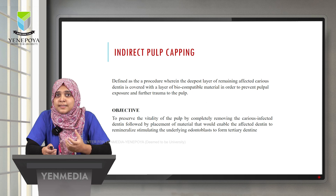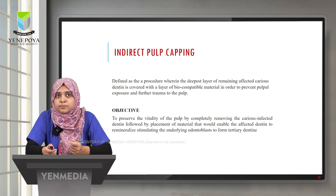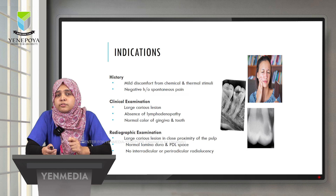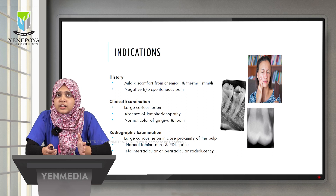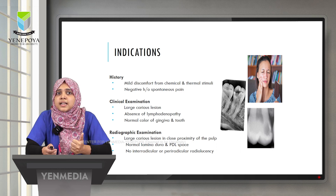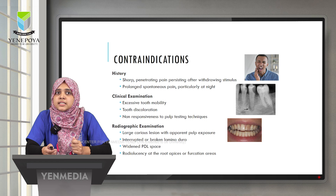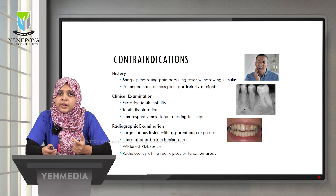Indirect pulp capping is defined as the procedure in which the deepest layer of remaining affected caries dentine is covered with a biocompatible material to prevent pulp exposure and further trauma. Indications include history of mild discomfort, no spontaneous pain, large caries lesions without lymphadenopathy, and radiographically normal lamina dura and PDL space with no periradicular radiolucency. Contraindications include history of sharp penetrating pain especially at night, excessive tooth mobility, discoloration, periapical abscess, widened PDL space, and apical or periapical radiolucency.